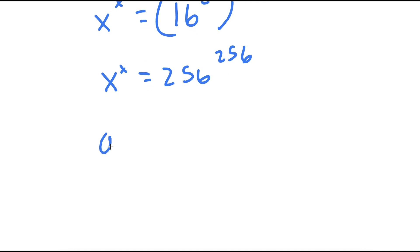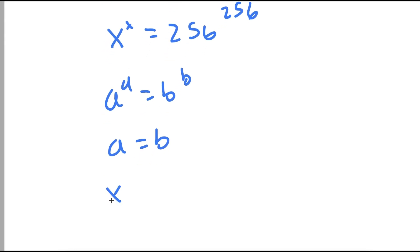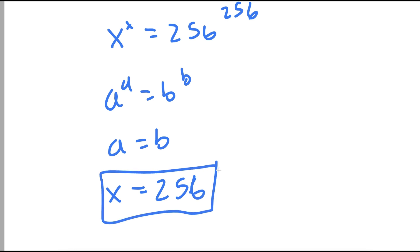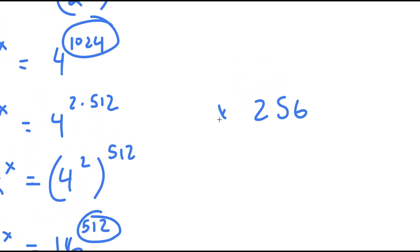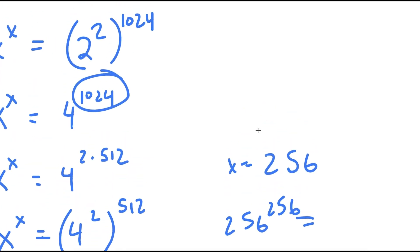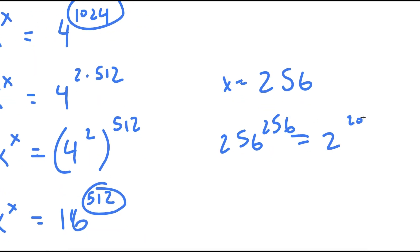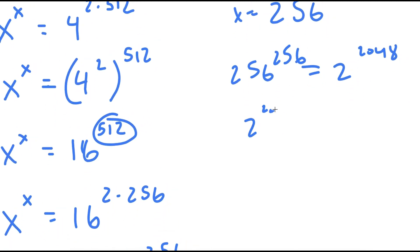If I have something in the form a to the power of a equals b to the power of b, this means a is equal to b. So in this case, x is equal to 256. To test this, I plug in 256 for x: 256 to the power of 256 is equal to 2 to the power of 2048. And since we just derived all of this, we know that 2 to the power of 2048 is equal to 2 to the power of 2048.